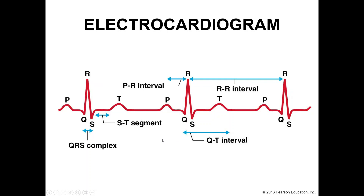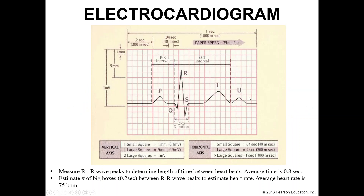To recap: we've talked about atrial depolarization, ventricular depolarization and atrial contraction, and ventricular contraction and ventricular repolarization. R-to-R intervals can be used to measure heart rate. This is one of the more difficult topics in the cardiovascular system — it just takes a little practice. Now let's briefly mention how to interpret an EKG to measure heart rate.